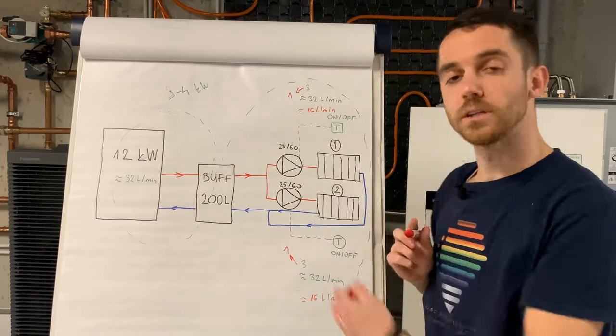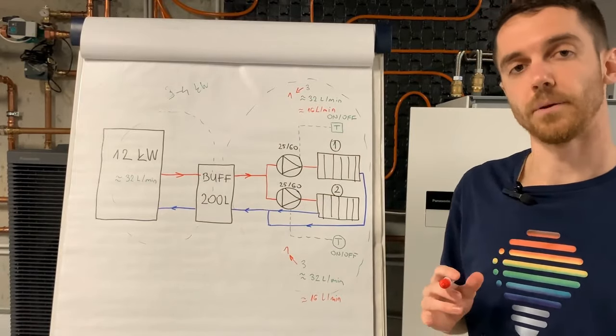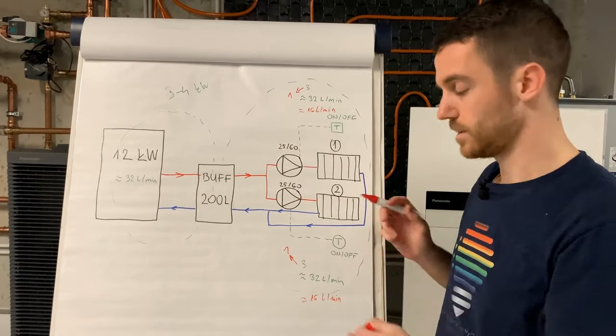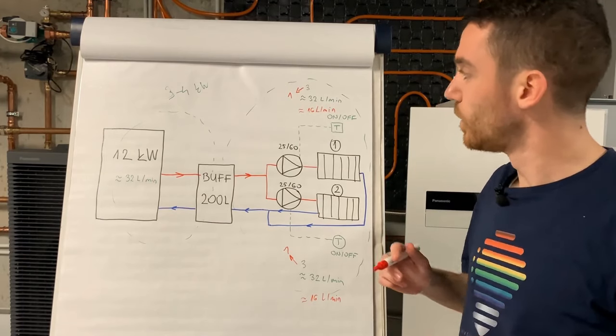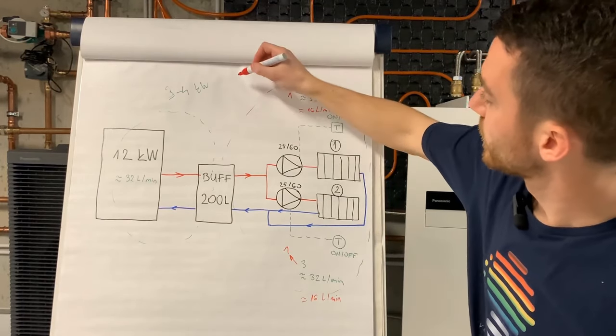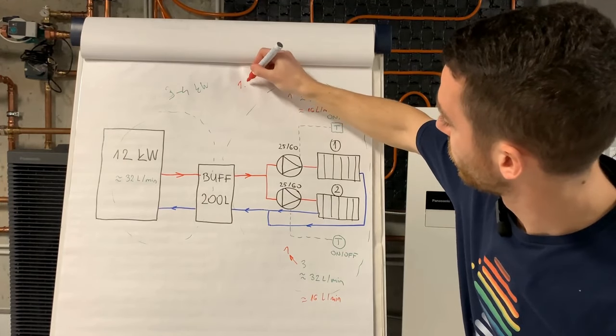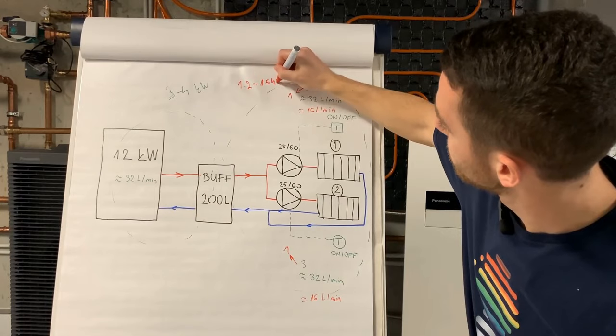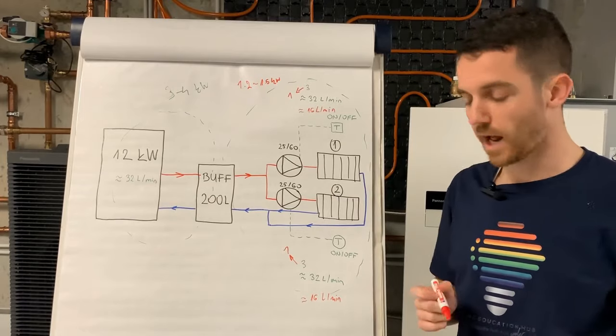Now we have 32 liters per minute on full, and here 32 liters per minute full. With only this, switching the speed from the maximum to lower one, we reduced peak consumption to around 1.2 to 1.5 kilowatt. On peak, we reduced compressor consumption by half.